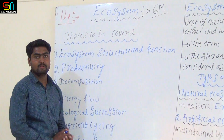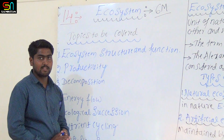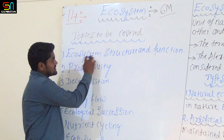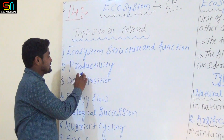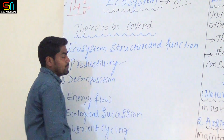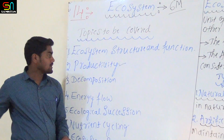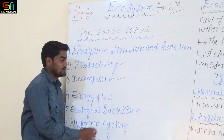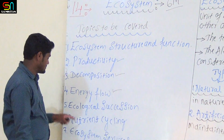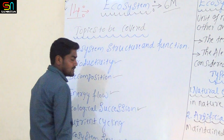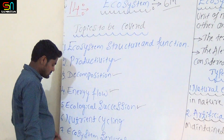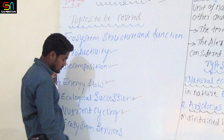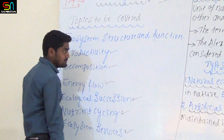Topics to be covered: First, ecosystem structure and function. Second, productivity. Third, decomposition. Fourth, energy flow. Fifth, ecological succession. Sixth, nutrient cycling. And finally, seventh, ecosystem services.